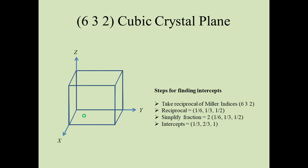Simplify the fractions and the Miller intercepts will be 1/3, 2/3, and 1. 1/3 is the intercept along the x-axis, 2/3 is the intercept along the y-axis, and 1 is the intercept along the z-axis. This is the region 1/3 of this edge up to point A along the x-axis.